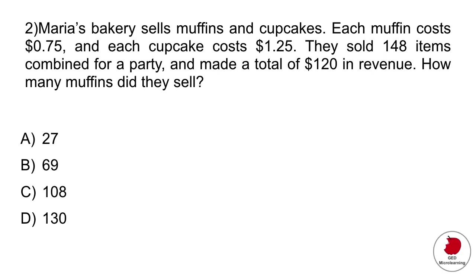Question 2. Maria's Bakery sells muffins and cupcakes. Each muffin costs 75 cents and each cupcake costs $1.25. They sold 148 items combined for a party and made a total of $120 in revenue. How many muffins did they sell? This is a system of equations problem.